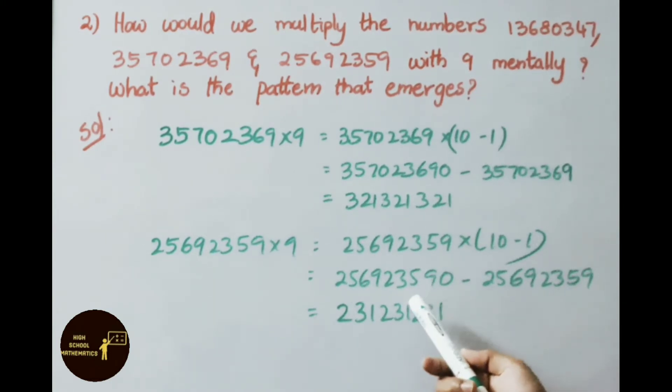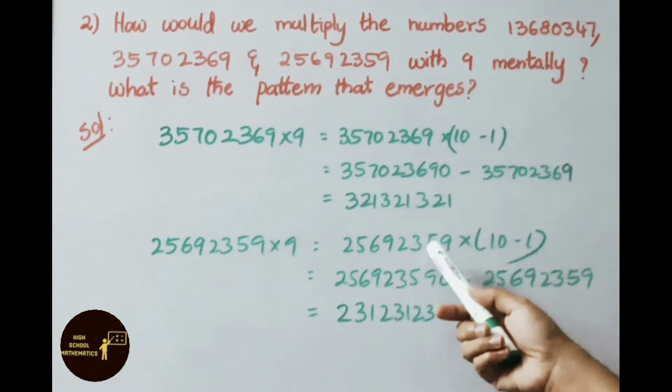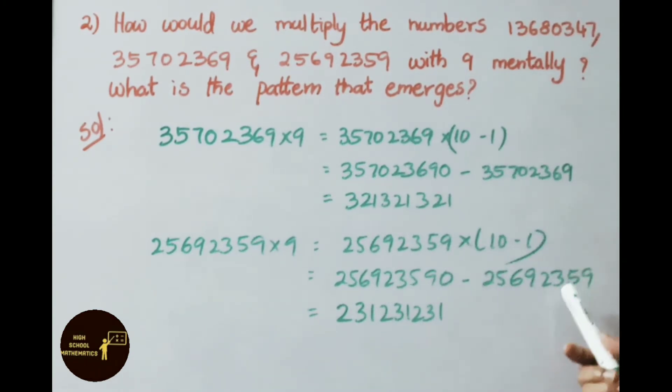Minus the given number multiplied by 1, we get the same number, that is 2 crore 56 lakh 92359. After subtracting these two numbers, we get the result 23 crore 12 lakh 31231.